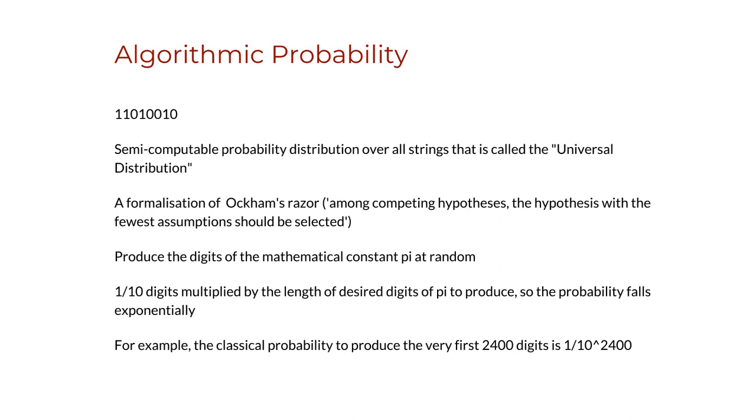But if instead of shooting out random numbers to produce the digits of pi, one were to shoot out computer programs at random able to produce the digits of pi, the resulting probability would be extremely different. A program that produces the digits of pi would have a much higher probability of being produced by a computer program. This is because concise and known formulas for pi can be coded in short computer programs that generate any arbitrary number of digits of pi, as compared to random objects that would have much longer computer programs.